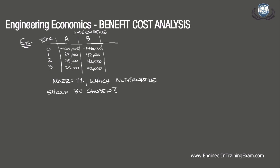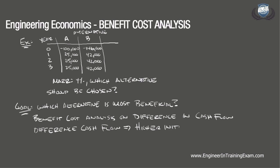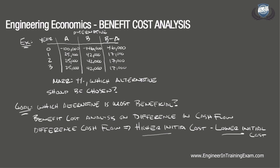The goal is to determine which alternative is most beneficial for the firm by computing the benefit cost ratio on the cash flow representing the difference in the alternatives. This difference in cash flow can be established by subtracting the lower initial cost alternative cash flows from the higher initial cost cash flows. Adding a column for B minus A: the initial cash flow difference is $46,000, and the benefits in years 1, 2, and 3 the difference is $17,000.